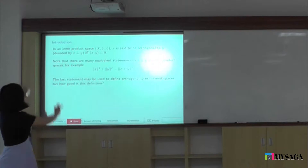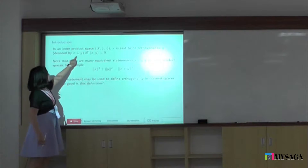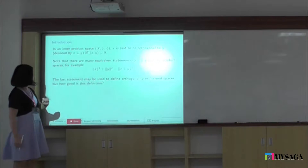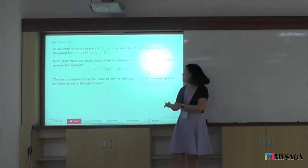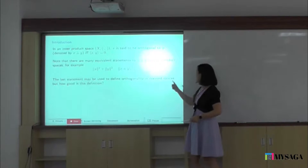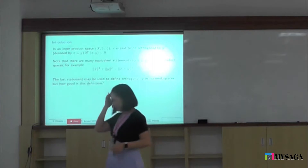Erase everything, and now you're in a normed space and you say: x is orthogonal to y if and only if I have this definition. But how good is this notion? Surely, once you move from inner product space to normed space, you lose certain things. So this cannot be as good as your usual orthogonality. But what do I mean by 'how good is this definition'? It's a very vague statement.